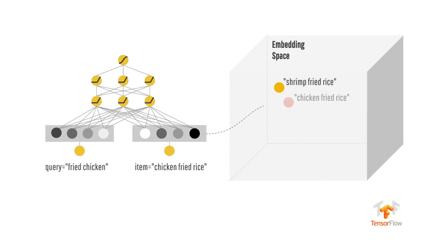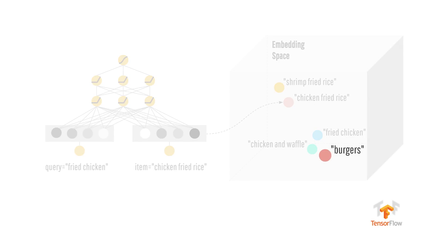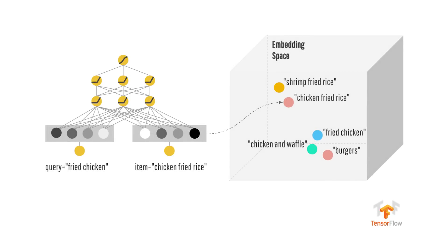But one limitation is that it's actually hard to generalize to previously unseen combinations without manual feature engineering. So instead, using deep neural networks, you can now generalize better through lower-dimensional embeddings. For example, your model might learn to recommend burgers given the query "fried chicken" because there are similar types of food.